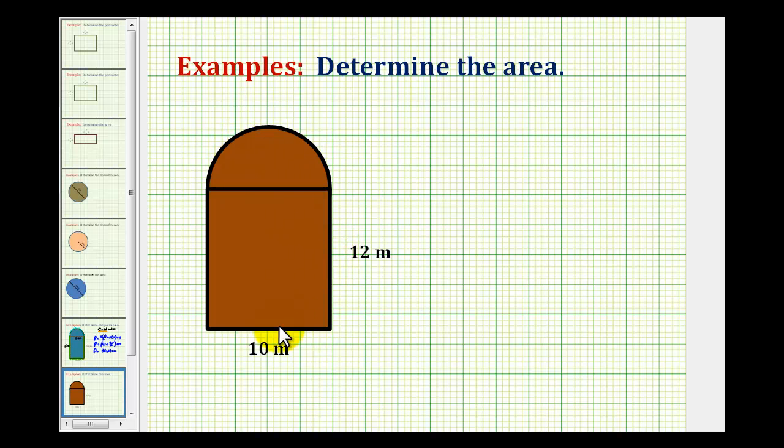So to determine the area of this rectangle, we'll use the formula area equals length times width. Go ahead and label 12 meters the length and 10 meters the width.